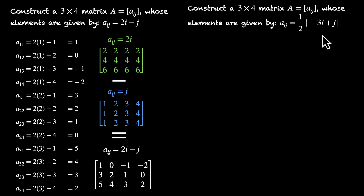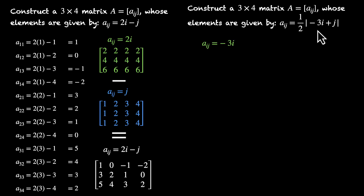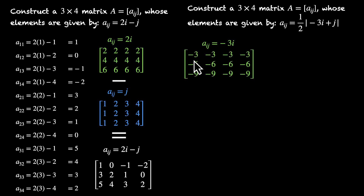I'll use the decomposition method. I'll break this formula down and first find a matrix given by Aij equals minus 3i — just this part. I'm multiplying the row number by minus 3. So I'll get minus 3, then minus 6, then minus 9. This is my matrix for Aij equals minus 3i.